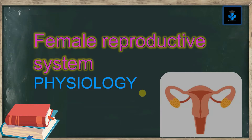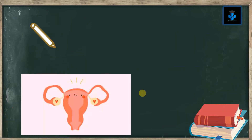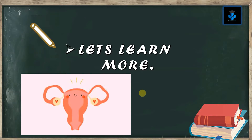Hey guys, welcome to Medifaction. Today let's learn about the physiology of the female reproductive system. The female reproductive system is made up of the internal and external sex organs that function in reproduction of new offspring. In humans, the female reproductive system is immature at birth and develops to maturity at puberty to be able to produce gametes and to carry a fetus to full term.